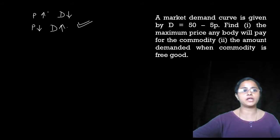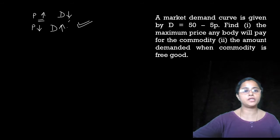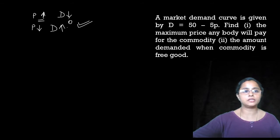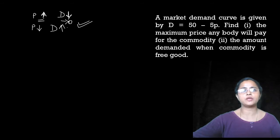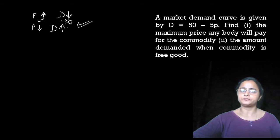Maximum price — when will the maximum price occur? The maximum price will be where demand falls to zero. If the price keeps increasing, demand keeps falling. So the maximum price is where demand equals zero.